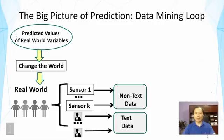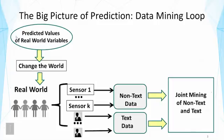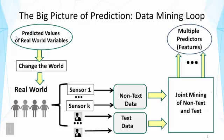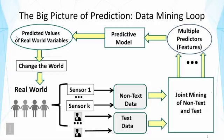How can we get from the data to predicted values? In general, we first do data mining and analysis, treating all the collected data together — joint mining of non-text and text data. Through this analysis, we generate multiple predictors, called features. These features are then put into a predictive model to predict the value of any interesting variable, which then allows us to change the world.